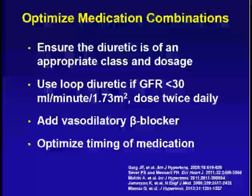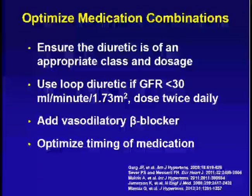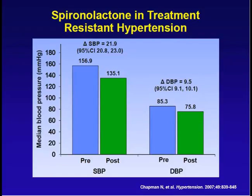We need to optimize medication combinations and ensure the diuretic is of the appropriate class — thiazides or non-thiazides. Loop diuretics don't work for resistant hypertension unless GFR is less than 30, when thiazides fail to work. We can add a vasodilatory beta blocker and optimize the timing of medication. The important drug in management of resistant hypertension is spironolactone — especially true for diabetic resistant hypertension, where it is very effective. This is shown clearly with benefit in both systolic and diastolic blood pressures.